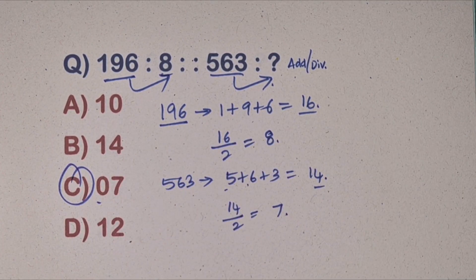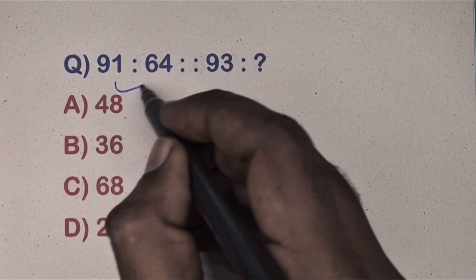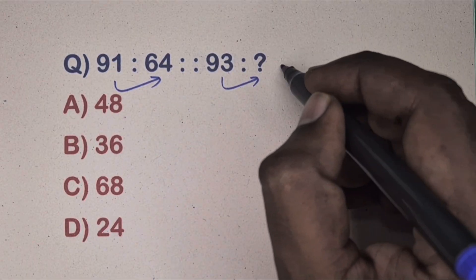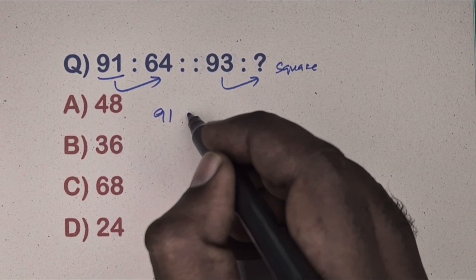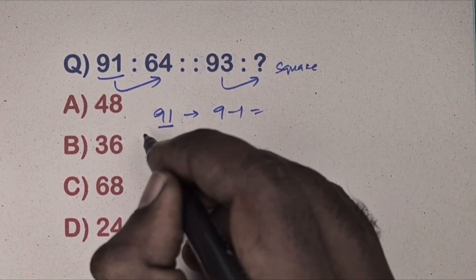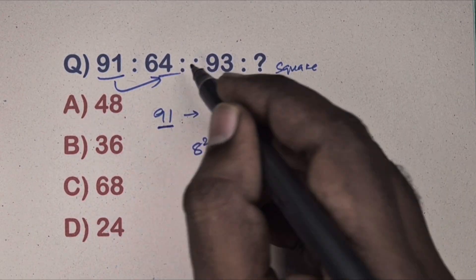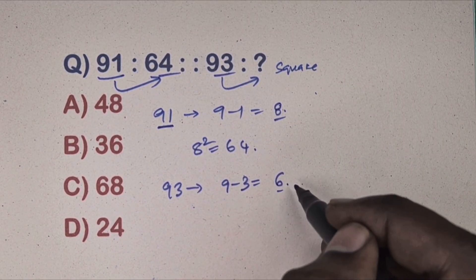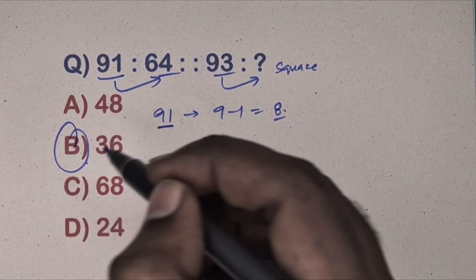Next question: 91 is related to 64, and 93 is related to which number? This is a square relation using digit subtraction. Take 91 — 9 minus 1 equals 8, and 8 squared equals 64, which is there. Take 93 — 9 minus 3 equals 6, and 6 squared equals 36. So option B is the correct answer.